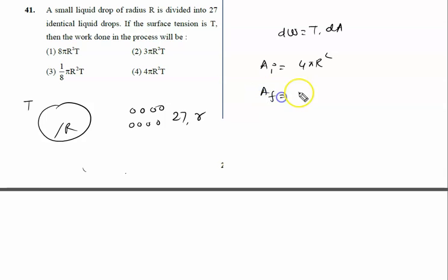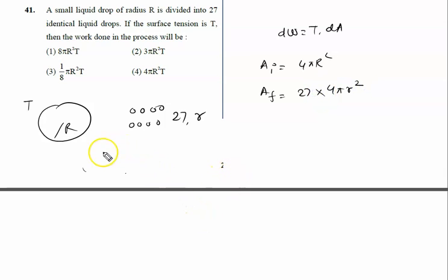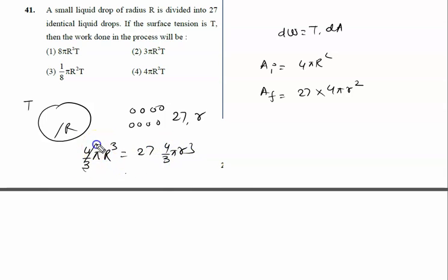The final surface area is given by 27 into 4π into small r². Now we calculate the relation between r and capital R. We know volume is constant, so 4/3 π R³ equals 27 into 4/3 π r³. The 4/3 π cancels, giving R³ = 3³ × r³, which means capital R equals 3 times small r.